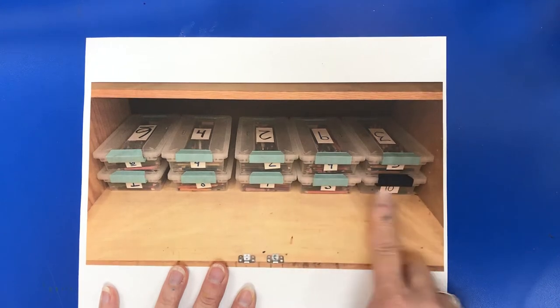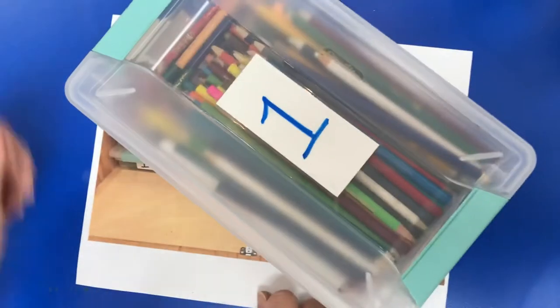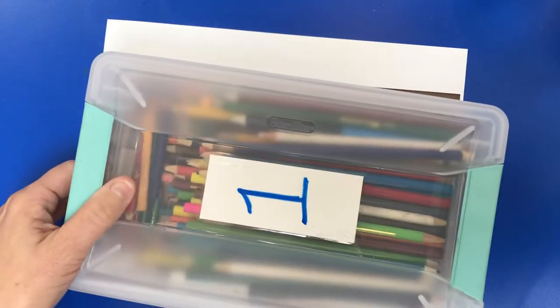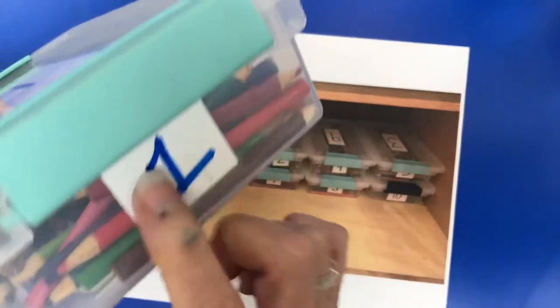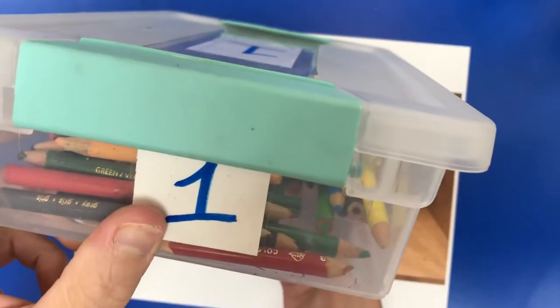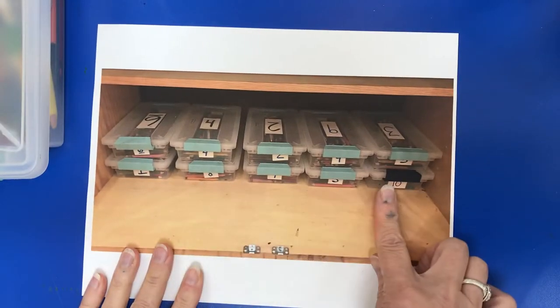The numbers are facing out and the skinny side is facing out, so they're not just tossed in like this. They're put in this way. You have a number on both ends, so it doesn't matter which end goes in first, but they're put away like this.